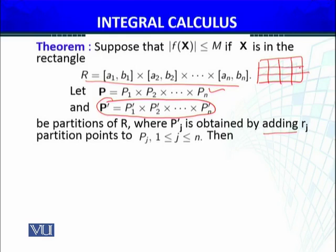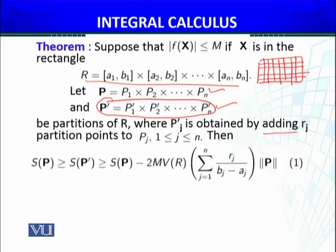What we mean by adding r_j partitioning points is that the number of rectangles increases. The second partitioning adds more rectangles — these are in fact the refined ones. Then we must have a certain inequality.